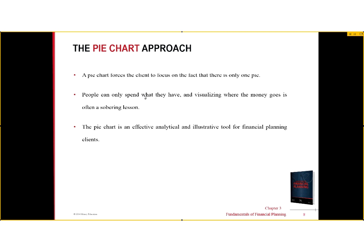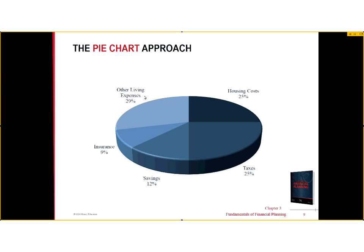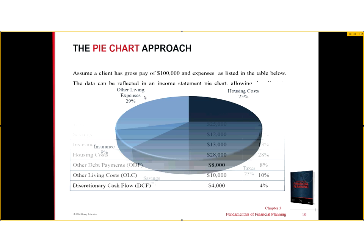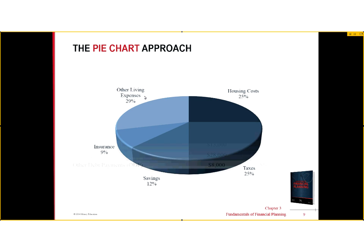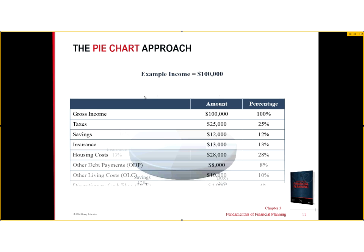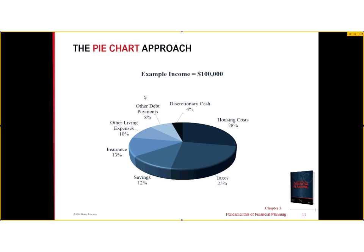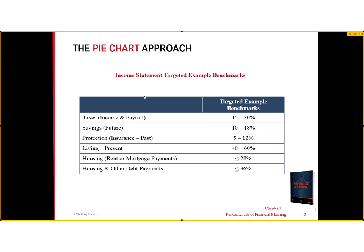The pie chart approach is just visually showing clients where their cash flow is going — for example, taxes and housing costs might be 50% right off the top. This may communicate more effectively than subcategories on the income and expense statement, so we might show both. You can do a pie chart based on percentages or dollar amounts.